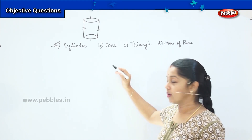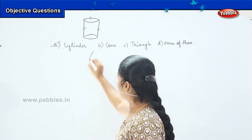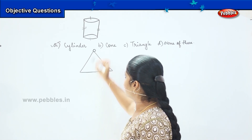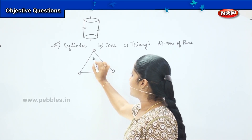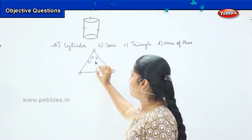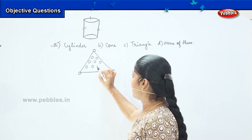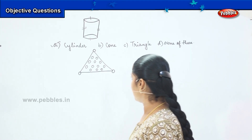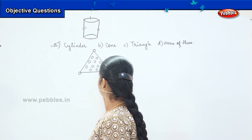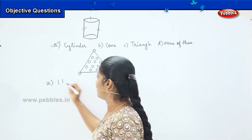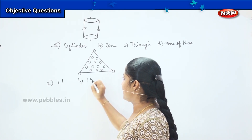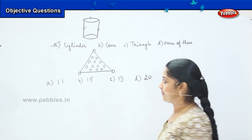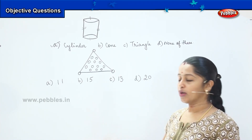Shall we do the next question? So here is your next question. Now I am going to draw a triangle, and in this triangle I will be drawing few circles. Your question is you need to tell me how many circles are there in this diagram. So are you all ready to count along with me? Your options are A: 11, B: 15, C: 13, and D: 20. Shall we count the number of circles in this picture?